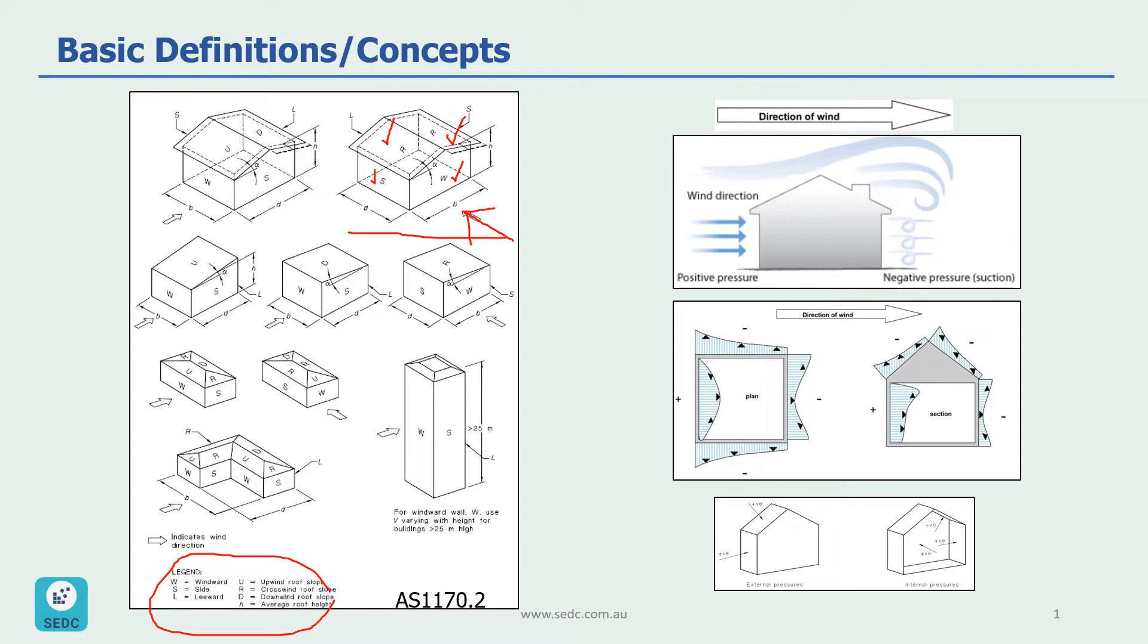For the roof, we might have three different legends depending on the direction of the wind and the slope of the roof. In this specific case, both sides of the roof are called crosswind roof slope. In this example here, with the wind blowing in this direction, this side of the roof is called upwind roof slope, and the other side is called downwind roof slope.